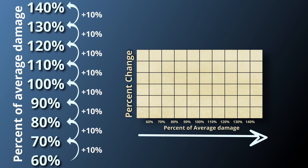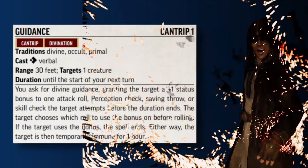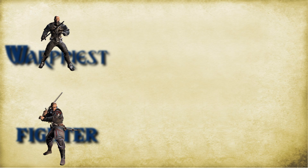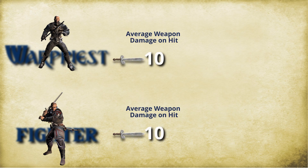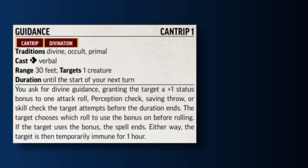As a result, as the attack bonus increases, the percent change will decrease — because it's expecting a bigger return from a bigger starting point. This gives the illusion that it's adding less damage as the bonus goes up. Let's look at an example: I'm about to cast the Guidance cantrip, giving someone a plus one status bonus to their attack roll, but I don't know whether to cast it on the war priest or the fighter. They both deal 10 average weapon damage on a hit.